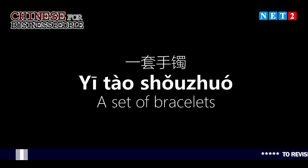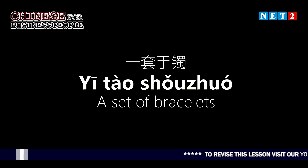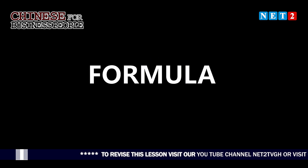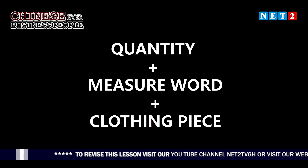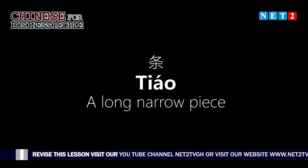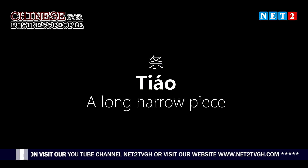Next is bracelets. A set of bracelets is 'yi tao shoujuo' — 'yi tao shoujuo'. Now, how do we say five sets of bracelets? The formula is the quantity plus the measure word plus the item. So five sets of bracelets will be 'wu tao shoujuo' — 'wu tao shoujuo'. That's pretty simple. We have come to the end of this episode on the measure word 'tao'.